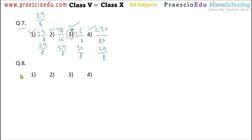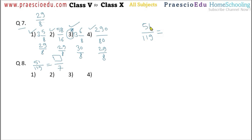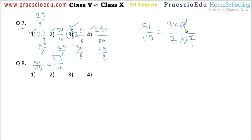Question number 8: write the correct number in the box. The question is 51 divided by 119 equals box divided by 7. Factoring: 51 equals 3 multiplied by 17, and 119 equals 7 multiplied by 17. Cancelling the common factor 17 gives 3 by 7. So the number to place in the box is 3, which is given in option number 4.